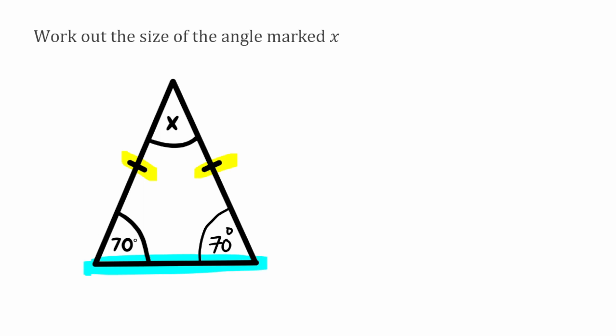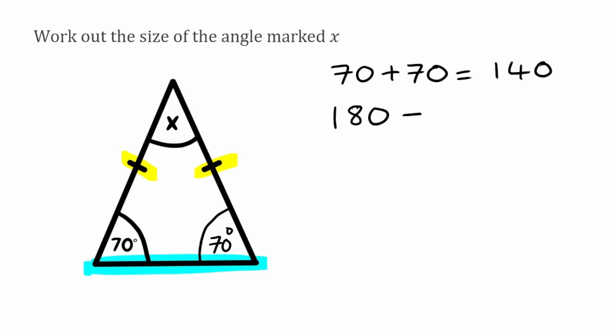So now we want to figure out what the missing angle is. We can use the rule that angles in a triangle always add up to 180. All we need to do is add the angles we've already got — our two 70s together gives us 140. Because all the angles add up to 180, we do 180 take away 140, which leaves us with 40. So the size of the angle marked x is 40 degrees.